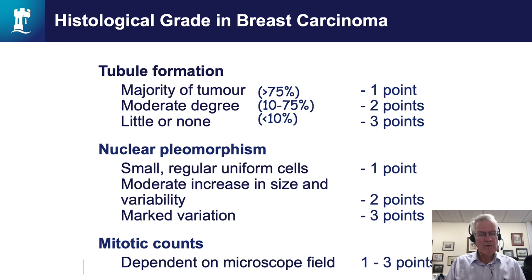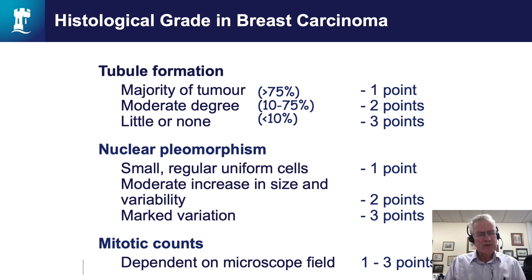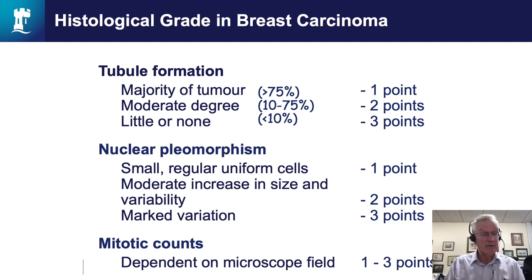Tubule formation looks at how well the tumor is producing glandular structures — by producing glandular structures it's doing normal things, as glands in the breast produce secretions like milk and high molecular weight proteins. Nuclear pleomorphism looks at the size of the nuclei, which is dependent on how much DNA is there and whether there are aberrations of DNA, reflecting abnormalities of nuclear DNA. Mitotic frequency looks at how fast the tumor is growing by inference from the number of mitotic figures, as dividing cells go through mitosis with visible chromosomal arrangements in the dividing cell nucleus.